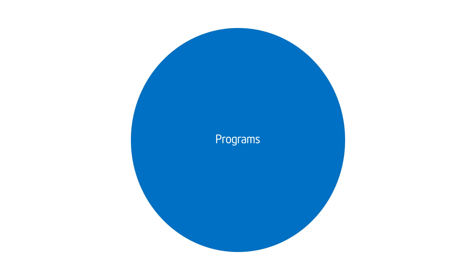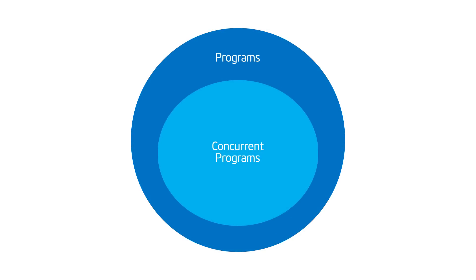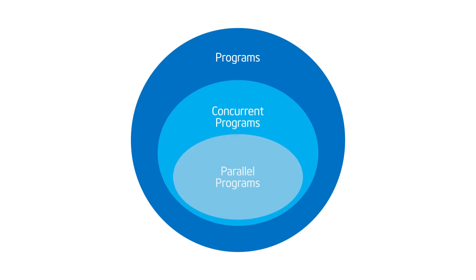You have a universe of all programs out there. Then you have a subset of them that are concurrent programs — programs that contain some amount of concurrency. And then you have an even smaller subset of those which are concurrent programs that you've modified to make parallel programs. That's what I mean when I say parallel programs.